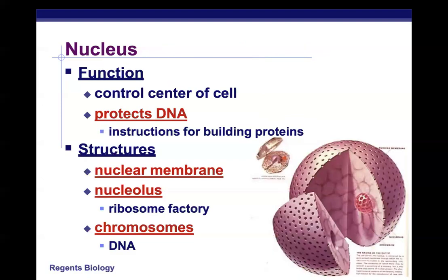First is the nucleus — the control center of the cell. The nuclear membrane, a phospholipid membrane around the nucleus, protects the DNA, which contains the important instructions to build proteins and do everything the cell needs. Inside the nucleus is a dense section called the nucleolus, where ribosomes are made. Also inside are chromosomes — long, linear structures where DNA is stored.